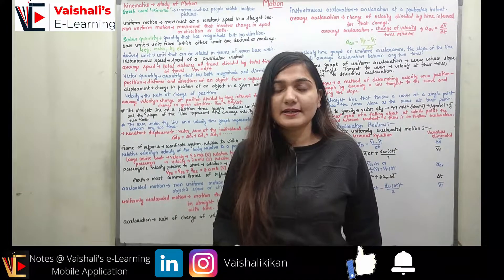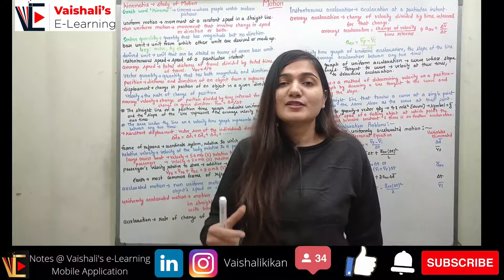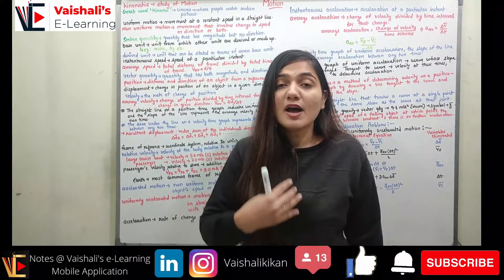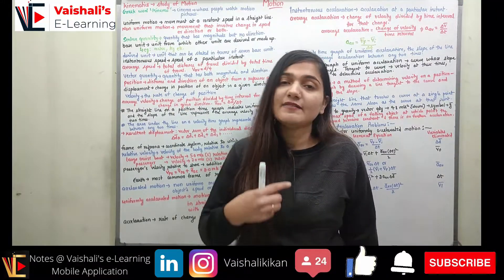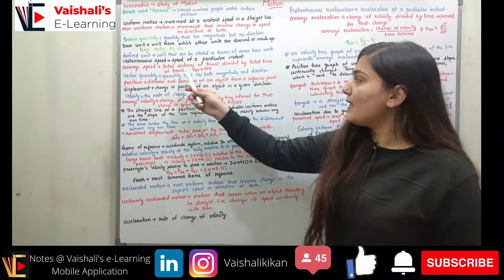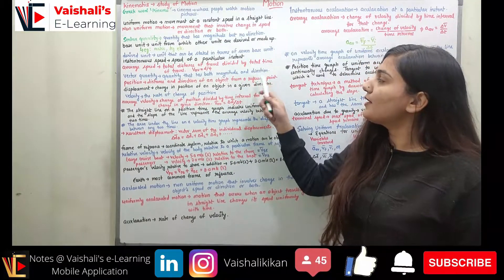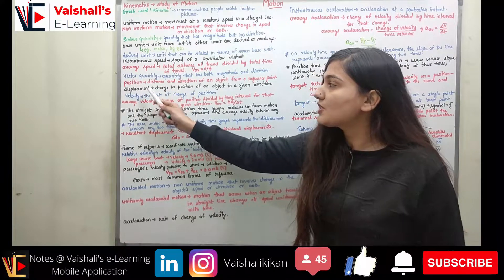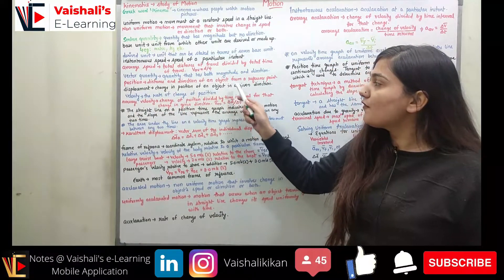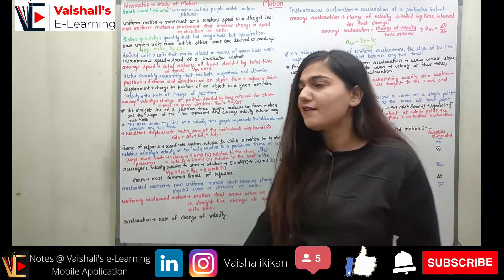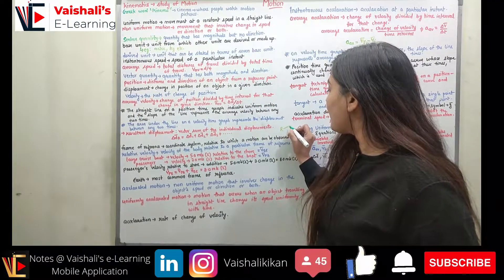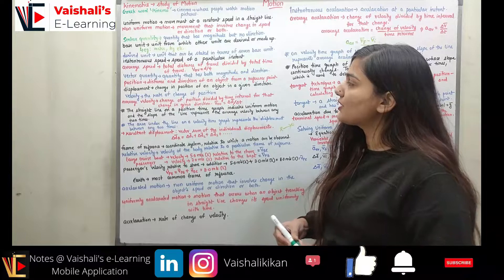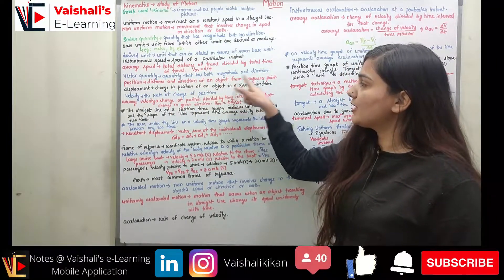A vector quantity is one that has both magnitude and direction. For example, displacement is a vector quantity — you specify both how far and in which direction you moved. Position is the distance and direction of an object from a reference point. You can choose any reference point, and the distance plus direction from it gives the position.